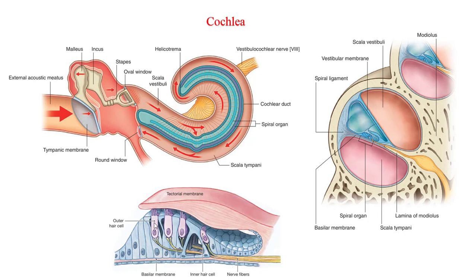Within the cochlear duct is a specialized structure called the spiral organ or organ of Corti. The sound receptors that transform mechanical vibrations into nerve impulses are located along the basilar membrane of this structure, making it the functional unit of hearing. Hair cells situated near the helicotrema can best detect low frequency sound. At the very base of the cochlea there is an opening called the round window, which is the passage through which the cochlea communicates with the middle ear. This opening is situated at the end of the scala tympani below the oval window and is closed off from the middle ear by a secondary tympanic membrane known as the round window membrane.